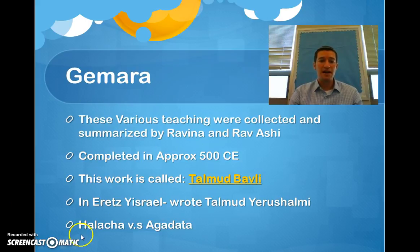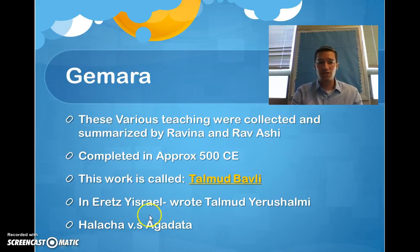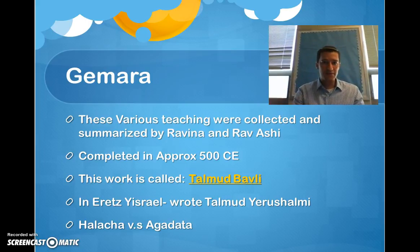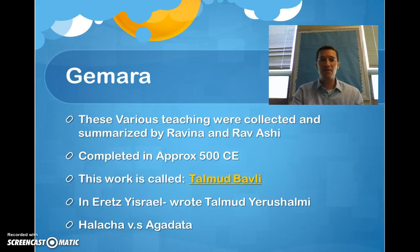Now, please write down on the bottom of your page that the Gemara is typically broken down into two parts: Halakha and Agadita. The Halakha parts of the Gemara are the back-and-forth discussions amongst the Amorayim — debating different aspects of the laws. The discussions and dialogue around the various Halakha make up the Halakha section of the Gemara.